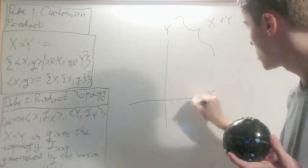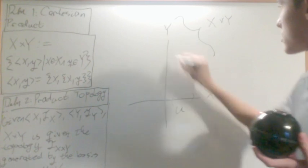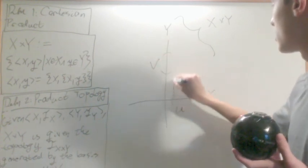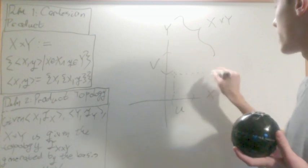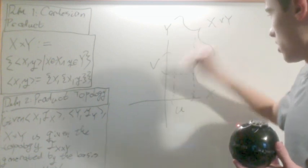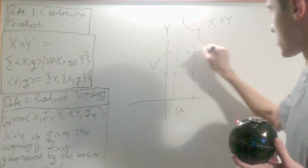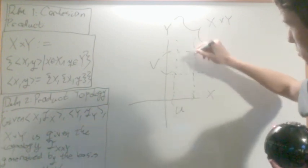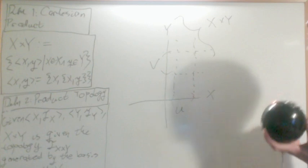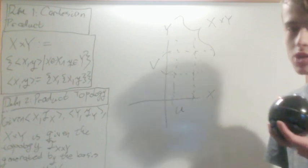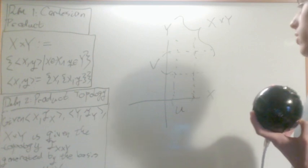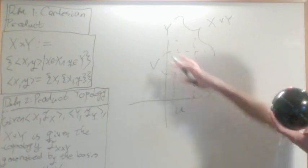If I have an open set U in X, an open set V in Y, I can go ahead and look at all pairs of points that are in this product, and that will be an open set, and you can do any arbitrary union of those. And this generates a basis.